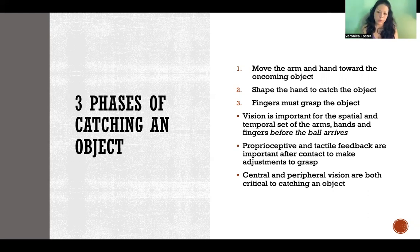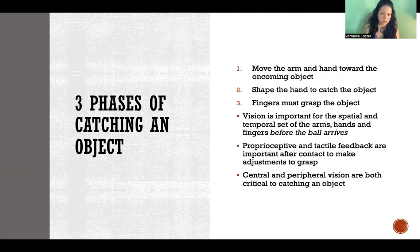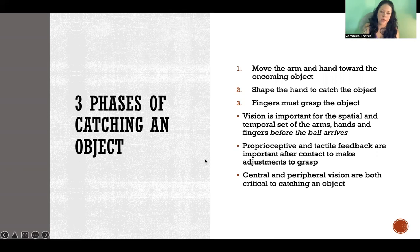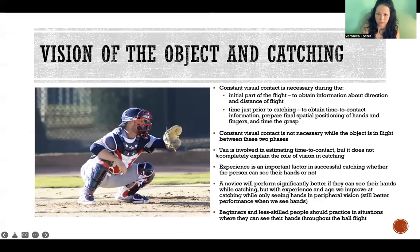Central and peripheral vision are both critical to catching an object. We use central and peripheral vision during different parts of the movement, or in different parts of the flight of the object — to see the object and to see your hands in peripheral vision before you catch the object.